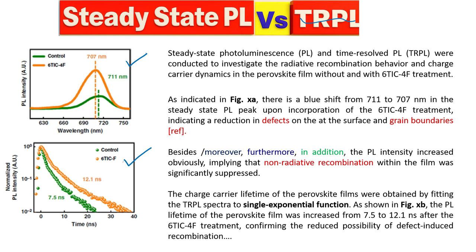Here we have two samples. The first one is basically the control one — the pristine one with no additional amount added. The second is the modified film, where we add 6TIC4F to the film, and we want to see what changes happen when we add this to the control film.